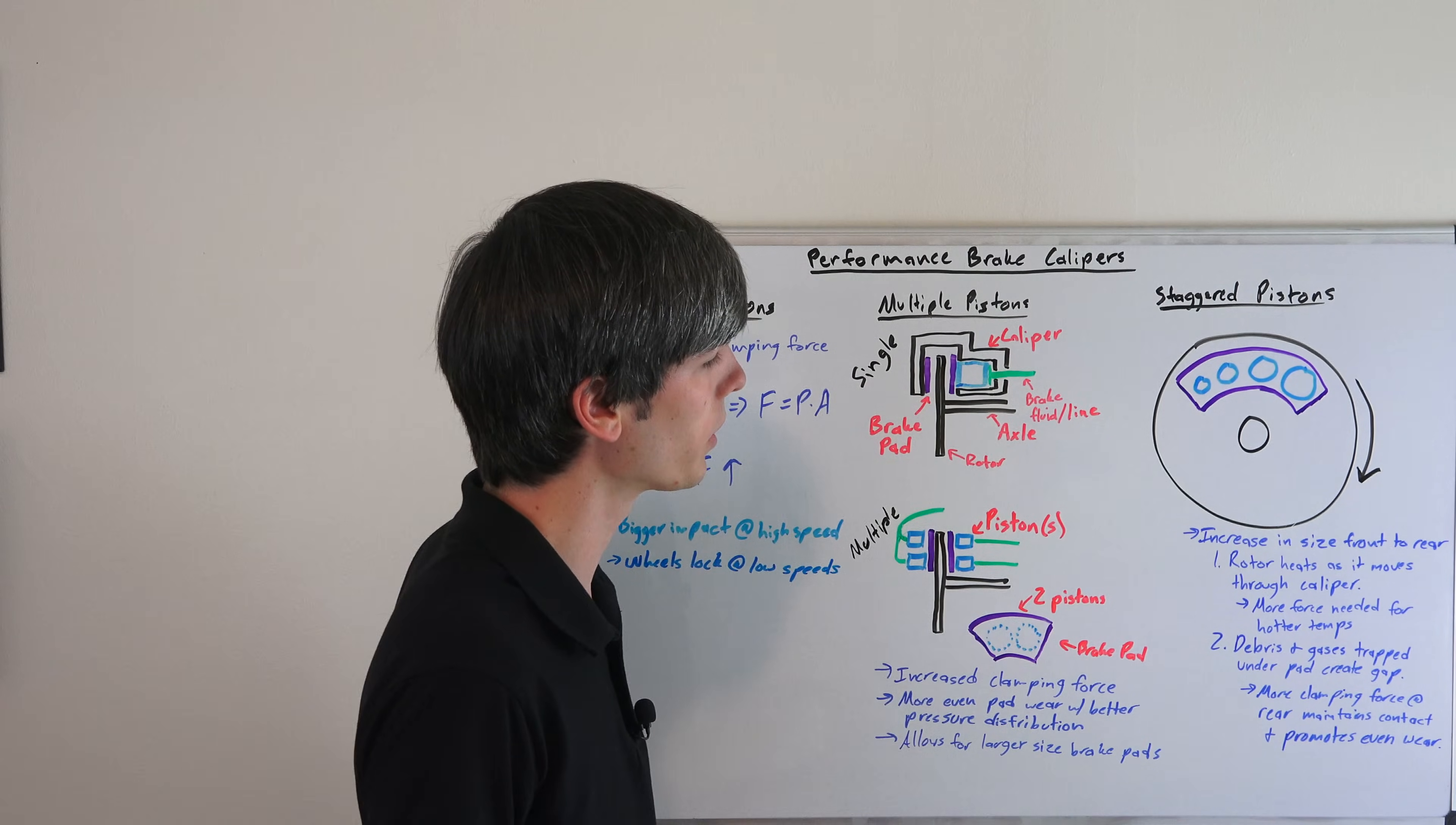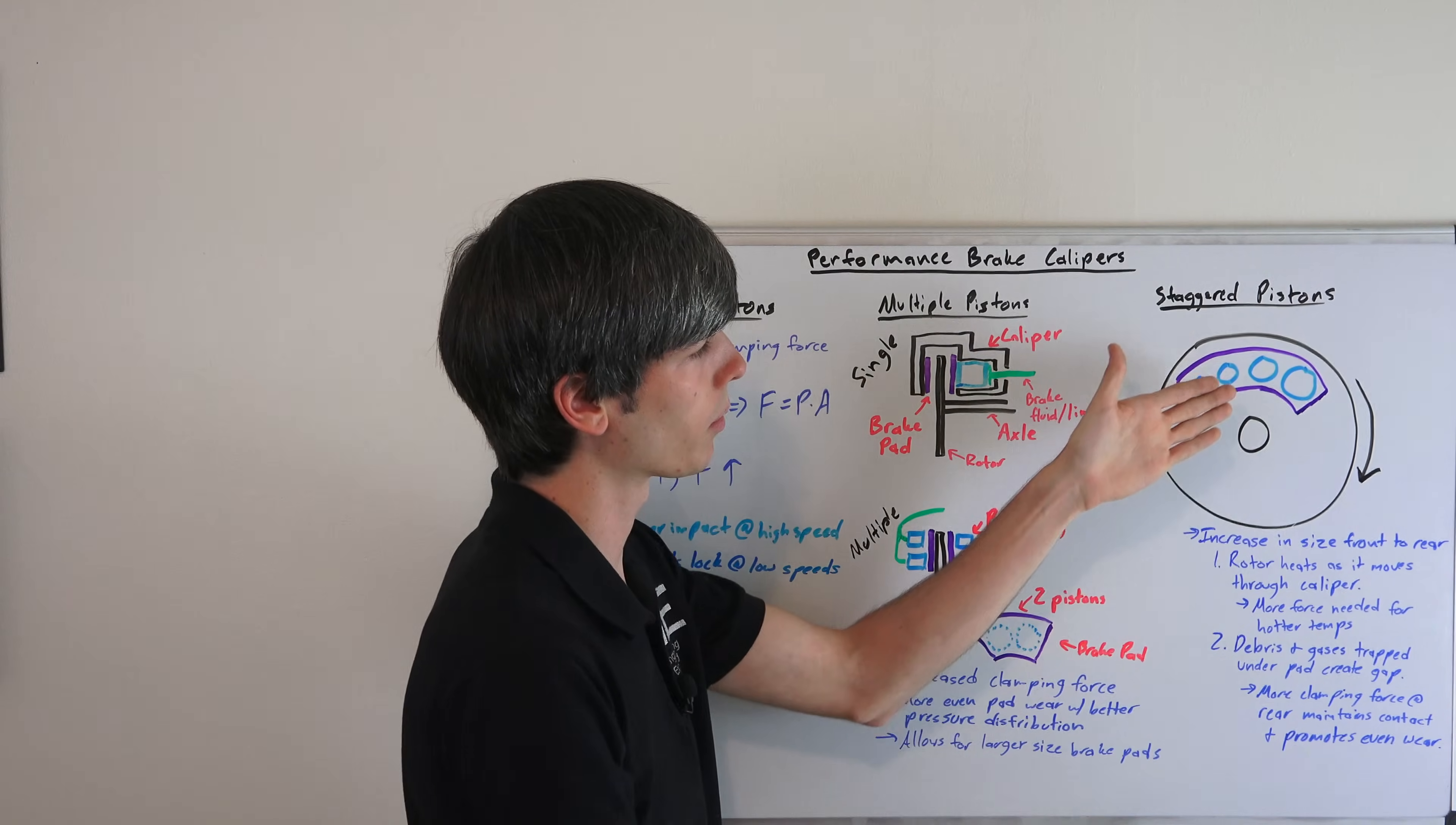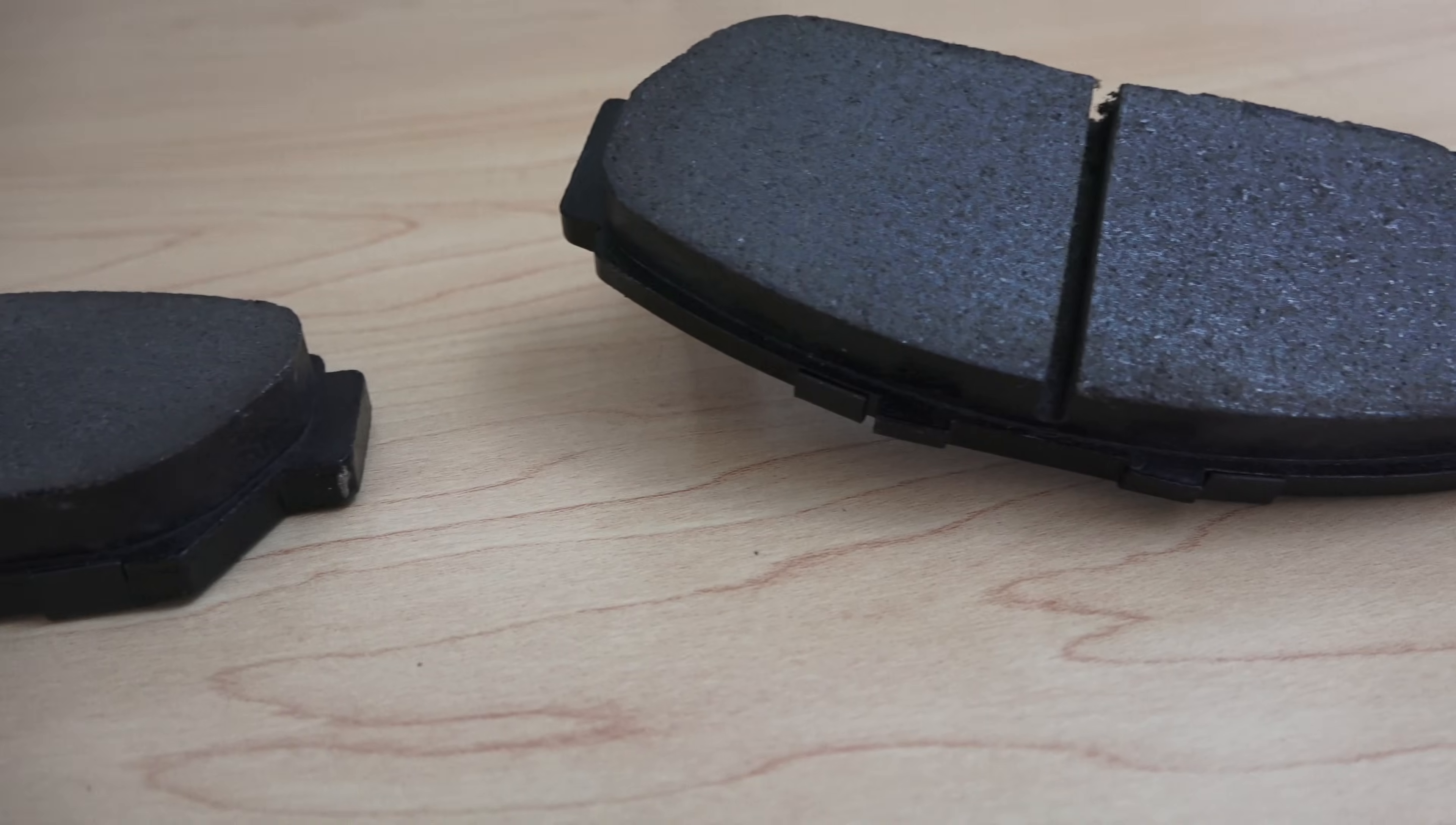The other reason is debris and gases get trapped in here. So as those debris and gases break off towards the beginning, they start to come out and then you have a gap within the brake pad and the rotor. And so you need more pressure to make sure that that gap doesn't exist, and so you have more clamping force at the rear. And that helps maintain even pressure and even wear of that brake pad.